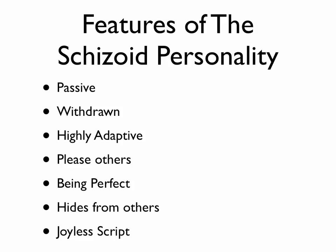Let's look at the features of the schizoid personality. They will present passive — very passive actually — and withdrawn from you and withdrawn from themselves. Their energy will be low and they will have a 'don't be close' injunction. They'll also be highly adaptive to you; in other words, they will go along easily with what you suggest. They're very suggestible.